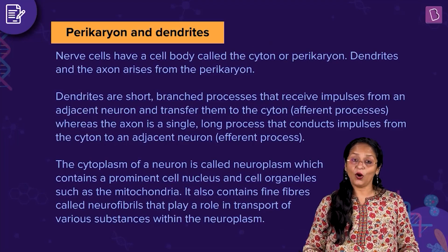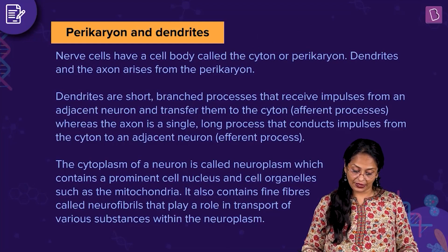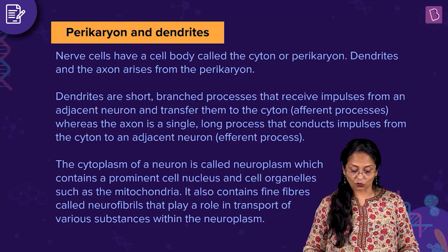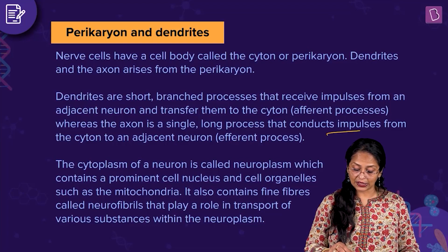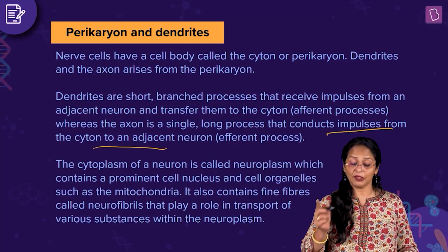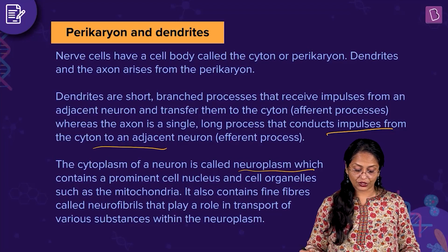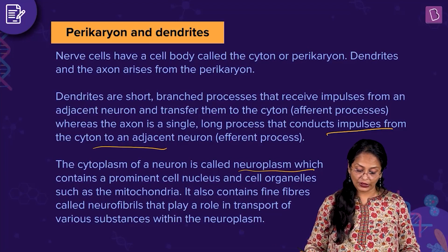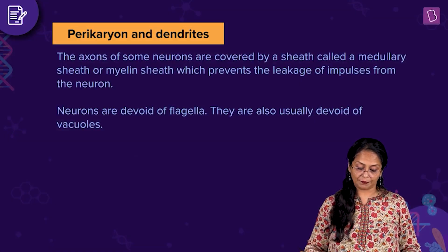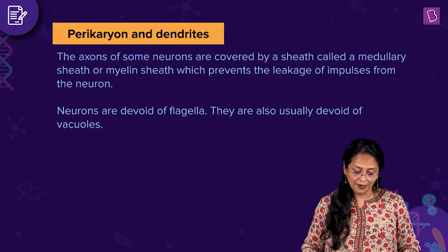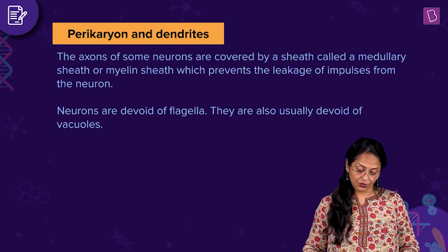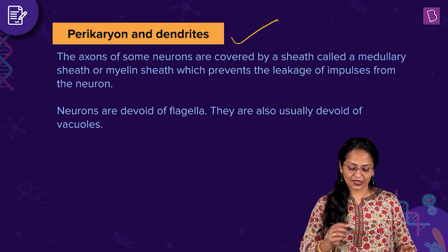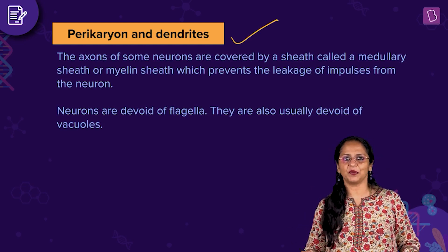Nerve cells have a cell body called the cyton or pericaryon. Dendrites and the axon arise from the pericaryon. Dendrites are short branched processes that receive impulses from an adjacent neuron and transfer them to the cyton — afferent processes. The axon is a single long process that conducts impulses from the cyton to the adjacent neuron — efferent processes. The cytoplasm, called neuroplasm, contains a large nucleus, cell organelles such as mitochondria, and neurofibrils that transport substances within the neuroplasm. Axons of some neurons are covered by the medullary or myelin sheath, which prevents leakage of impulses. Neurons do not have flagella or vacuoles. So the right answer — what distinguishes a nerve cell from other cells — is the pericaryon and dendrites.